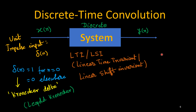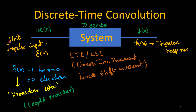When this unit impulse input is applied to the system, the system produces a corresponding output denoted H(n). This output is called the impulse response, because it is the response due to the unit impulse signal. Thus H(n) is called the unit impulse response.